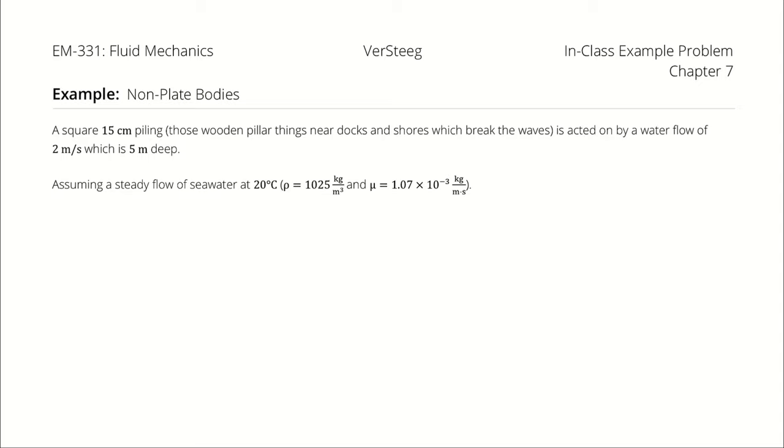A square 15 centimeter piling, those wooden pillared things near docks and shores that break the waves, is acted on by a water flow of 2 meters per second which is 5 meters deep.